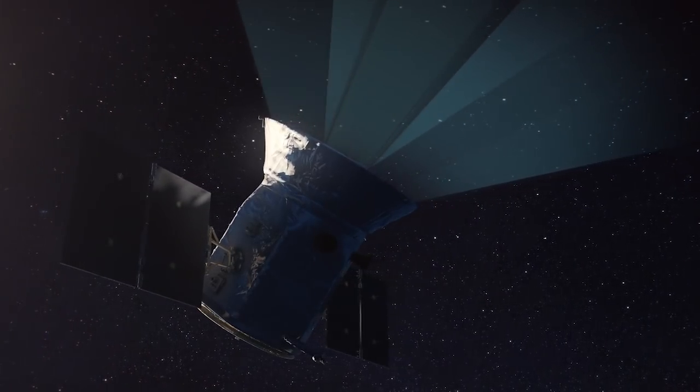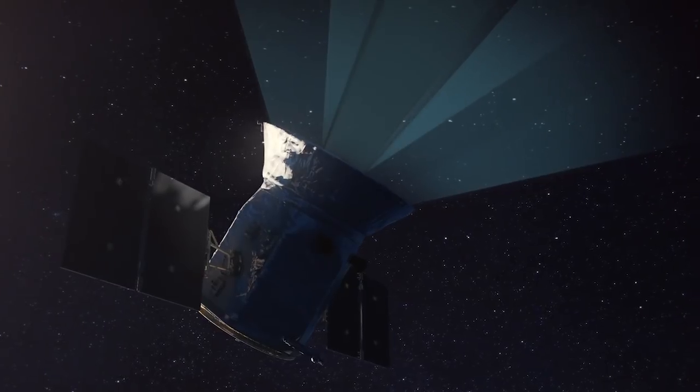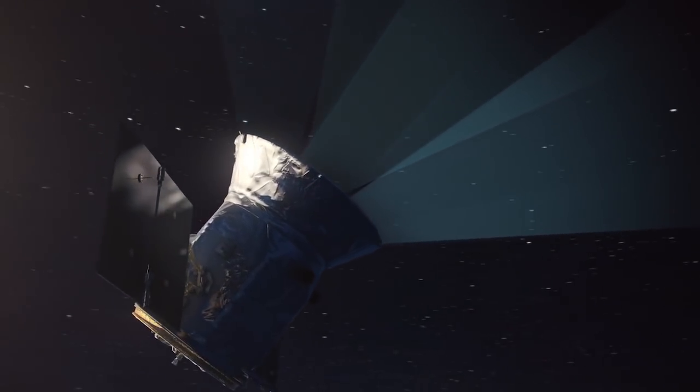In comparison, Kepler has found almost 4,000 confirmed exoplanets and 4,500 candidates. To date, 927 of those are thought to be terrestrial, meaning they have a solid rocky surface like Earth.